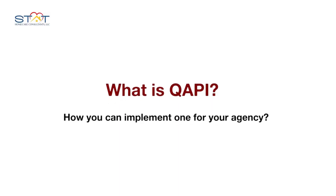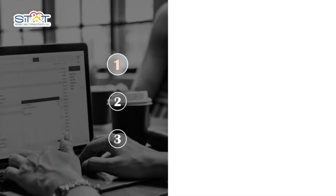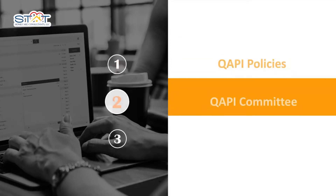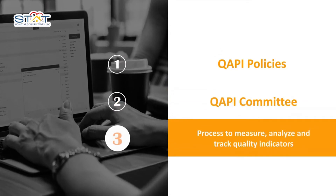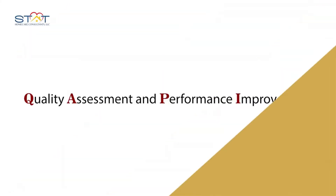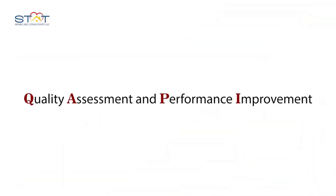So what does QAPI stand for, and how can you implement a program for your agency? You just need a few things: QAPI policies, a QAPI committee, and a process to measure, analyze, and track quality indicators. QAPI stands for Quality Assessment and Performance Improvement.